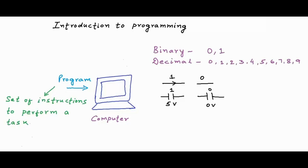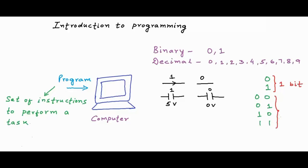A bunch of 1s and 0s put together. You can use a bunch of wires together to communicate or signal something, or you can use a bunch of capacitors together to store some data. If we use only one wire or one capacitor, we can signal or store only two possible values — 0 and 1. But if we use two wires or capacitors together, we can signal or store four possible combinations: 00, 01, 10, and 11. A binary digit is also called a bit. If you have only one bit, you can have two possible values, and if you have two bits, you can have four possible values. Each bit can either be 0 or 1. 1 is also called a set bit and 0 is also called an unset bit.